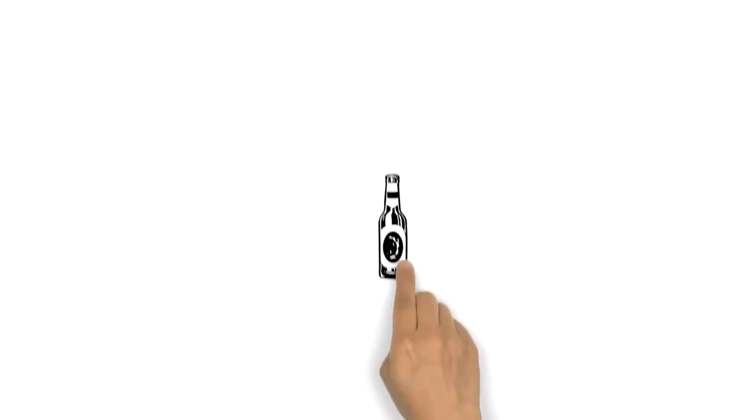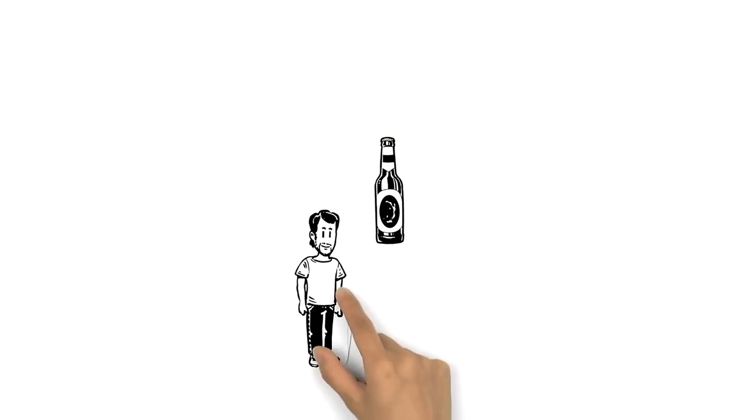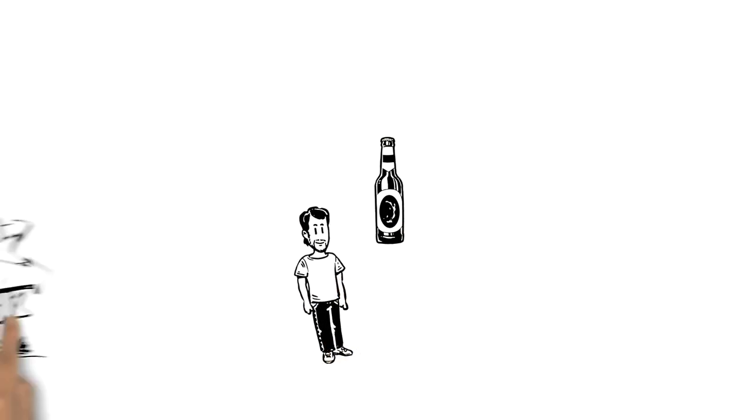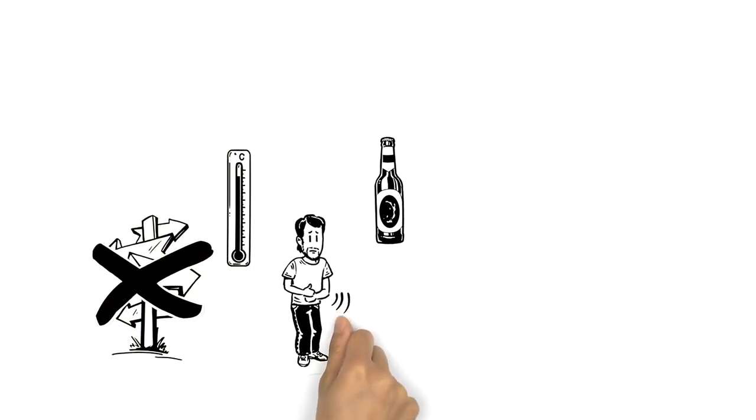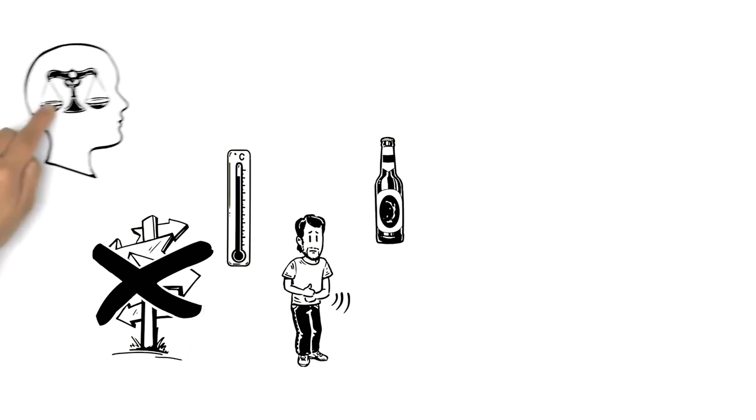Lower doses of alcohol cause Michael to lose his sense of balance and ability to make decisions. He might even be sick, because alcohol can irritate the stomach and have a negative effect on the inner ear.